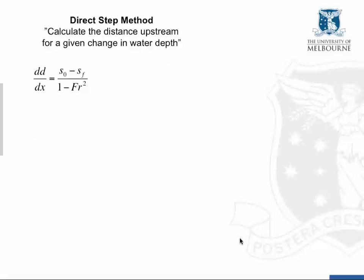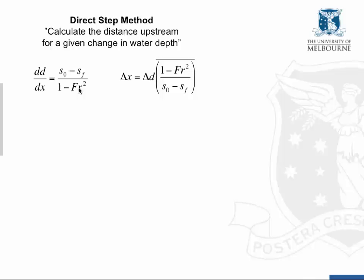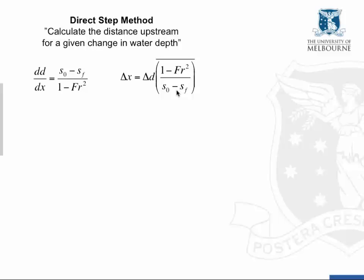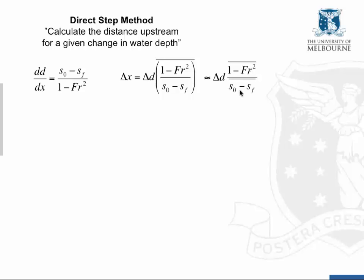Here's the equation for the direct step method, which gives the change in depth over the distance along the channel. We can rewrite that in this form where some distance Delta X equals some change in depth Delta D times the average of 1 minus Froude number squared, over S0 minus Sf. These averages are the averages along the distance Delta X.